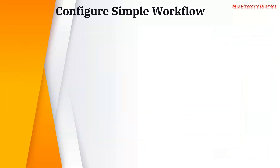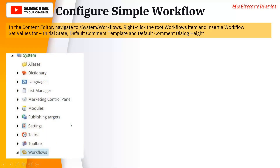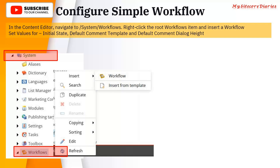Now let's see how to configure a simple workflow. Before defining your simple workflow, you need to document it — what are the different states, what are the different commands, and what are the different actions on those commands. The first step is: in the Content Editor, go to System > Workflow, right-click on the root of the workflow item, and insert a workflow. By default, the Workflow folder will be there; you right-click it and it will show the option to insert a workflow.